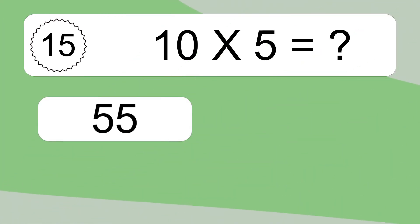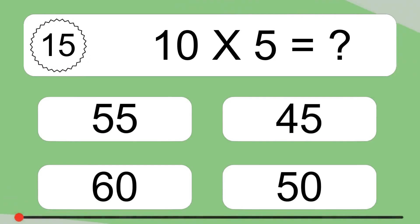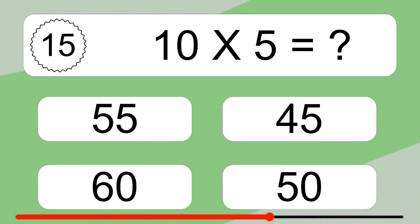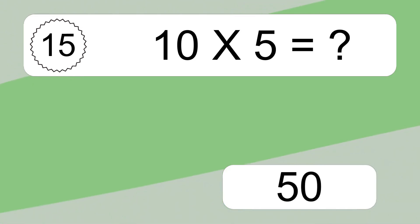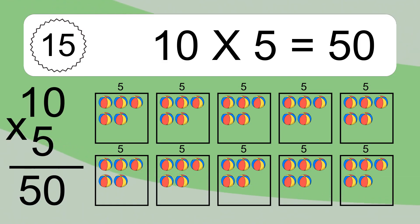10 times 5 equals what? 10 times 5 equals 50. We have 10 boxes, and each box has 5 colorful balls inside. If you count all the balls in all the boxes together, you will have 10 times 5 balls. This equals 50 balls.